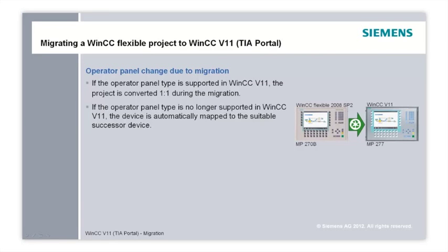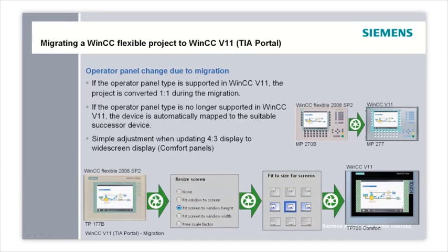You can specify prior to the migration how to place the contents of the migrated pictures on the new operator panel. This is a particular advantage in the case of widescreen resolution on the new operator panel. In the displayed example, the TP177B with a 4:3 resolution is migrated to a TP700 Comfort Panel with a widescreen resolution. In this example, the configured picture of the TP177B is adopted in the TP700 Comfort by the preset 'Fit screen to window height' option.